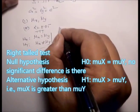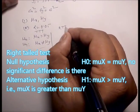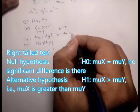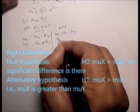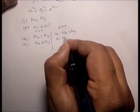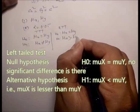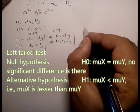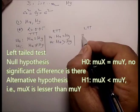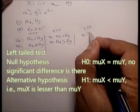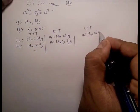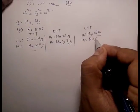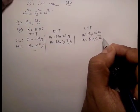For the right-tail test: H0 is mu_x equals mu_y and the alternative is mu_x greater than mu_y. For the left-tail test: H0 is mu_x equals mu_y and the alternative is mu_x less than mu_y.